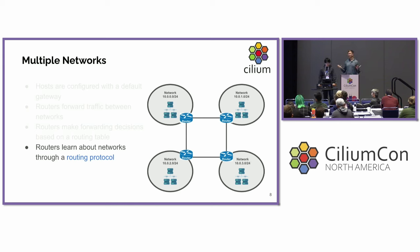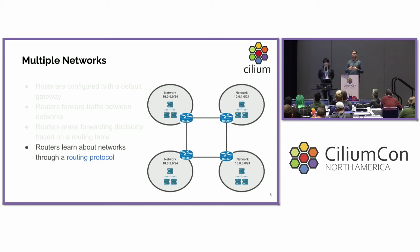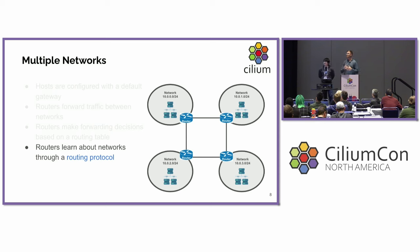How do routers learn about all these networks to put in the routing table? You can statically configure those routes, but that doesn't scale well. In small environments it's perfectly fine, but when you start talking about large enterprise networks, service providers, and so forth, routing protocols are used. Routing protocols are a process that runs on each of these routers. Those routing protocols send and receive messages on different interfaces, identifying other routers speaking the same protocol and learning what networks they know, then using that information to build the routing tables.